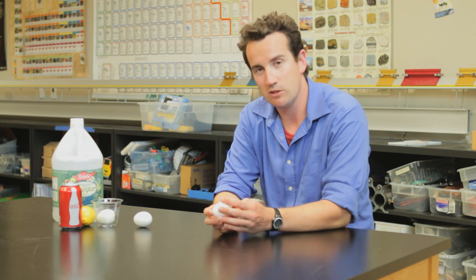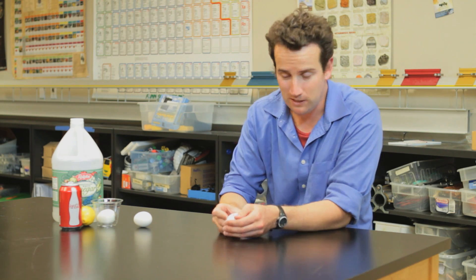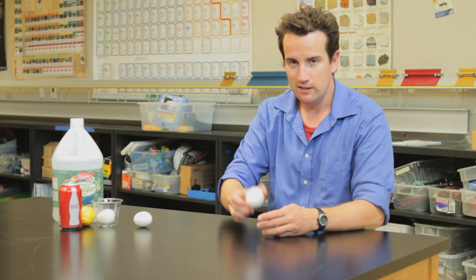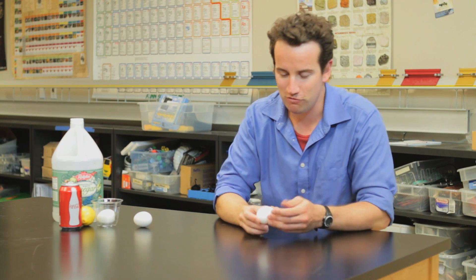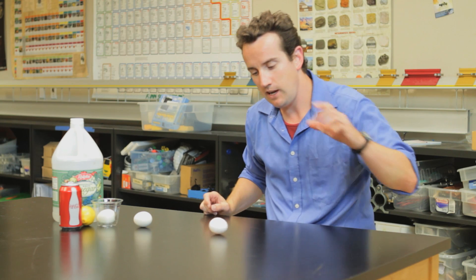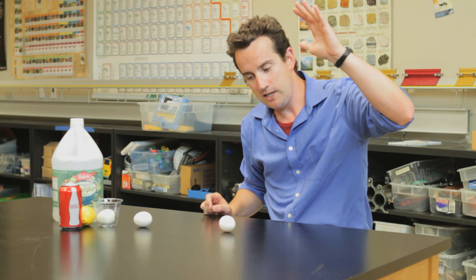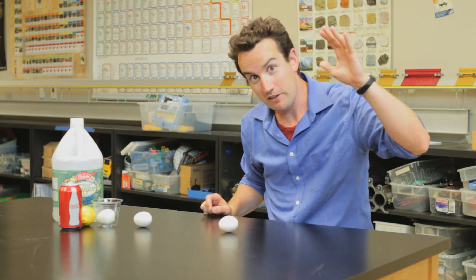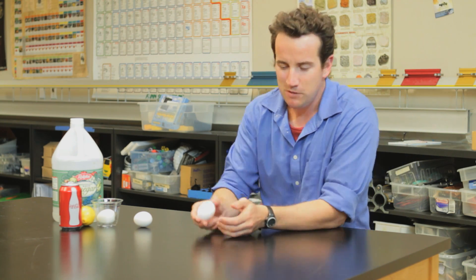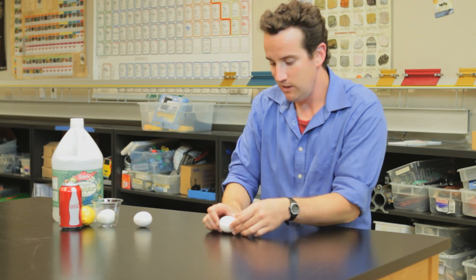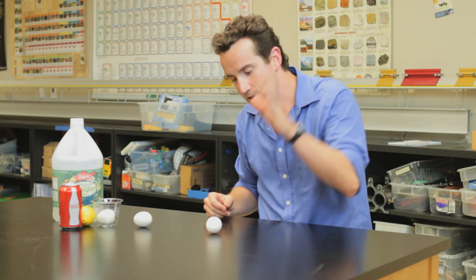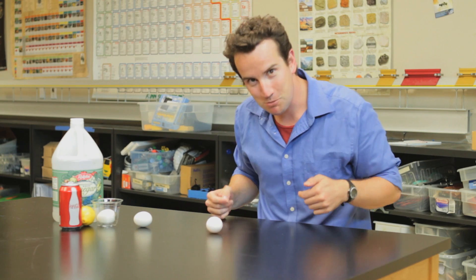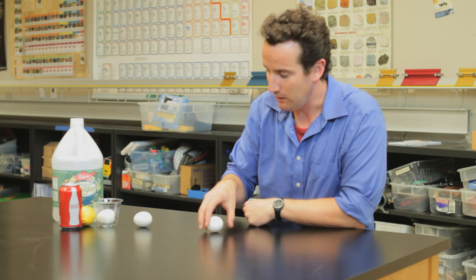Another thing you might want to do with eggs, that has to do with the way that they roll or spin, is spin an egg. Here is a fresh egg from the refrigerator, and when I spin it and stop it, it keeps spinning even after I've stopped it. That's because the inside of the egg is a liquid, and when I stop it, the liquid inside keeps spinning, and so the egg keeps spinning.